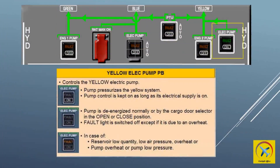The yellow ELEC pump is energized when selected on; selection is indicated when a blue color boxed ON light is illuminated. If electrical power is removed, the pump remains de-energized at the next electrical power application. When the yellow ELEC pump switch is selected to off, the electric-driven pump is de-energized. It is automatically energized when the forward or aft cargo door lever is operated. During cargo door operation, all other yellow system users are inhibited except for the number 2 engine thrust reverser, yellow system braking, alternate brakes, and parking brake.